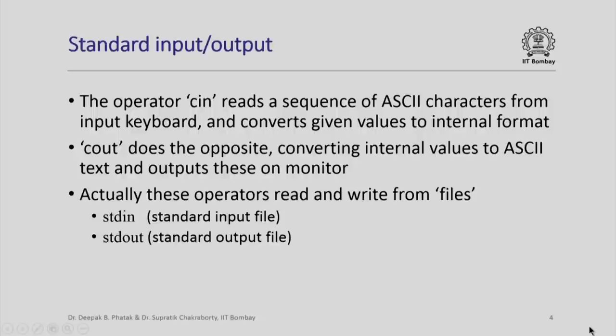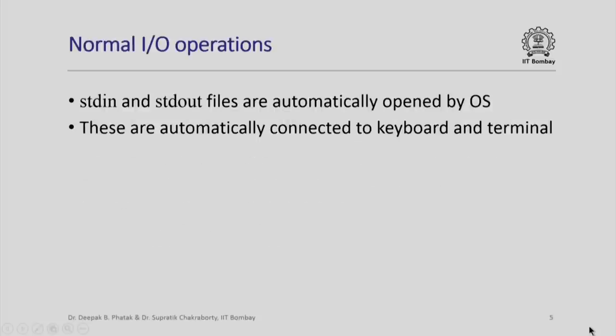Similarly, cout converts internal values into ASCII characters and outputs these on the monitor. Actually, these operators read and write from files. These two standard files are called stdin and stdout to represent standard input file and standard output file. The normal input/output operations are conducted by the operating system using stdin and stdout.